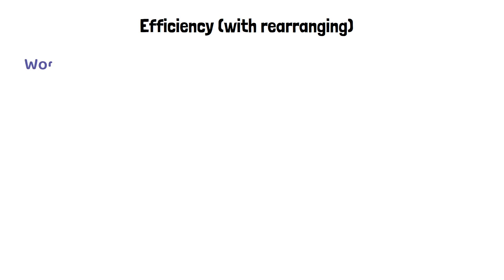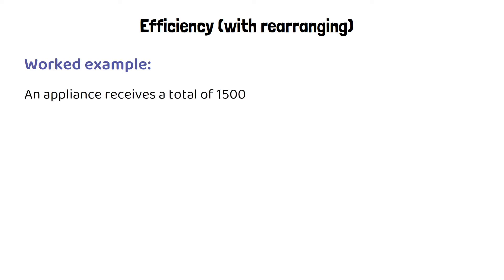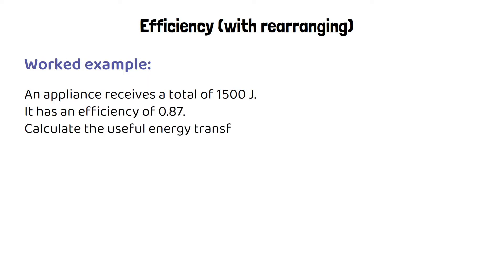Sometimes an exam question will ask you to work out something other than efficiency. They might give you the efficiency and the total energy input and ask you to work out the useful energy output. For example: an appliance receives a total of 1500 joules and has an efficiency of 0.87 — calculate the useful energy transferred.